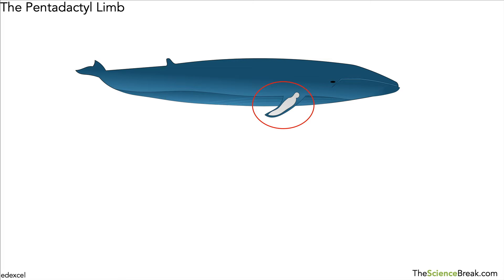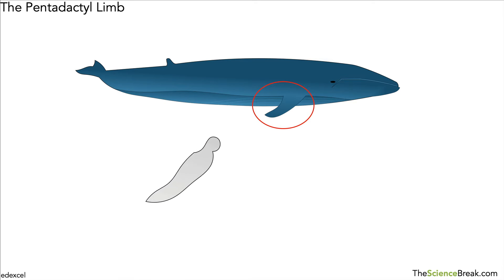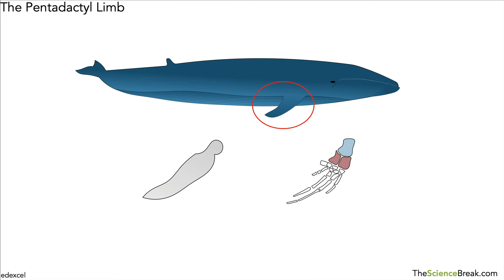If we were to imagine what the bone structure of the flipper looked like, we might think it's thin and flat, able to move around to help the whale steer through water. But when we actually look at it, the structure is different to what we might expect — it seems to have these finger-like projections and a couple of bones that seem to be a bit like a wrist.